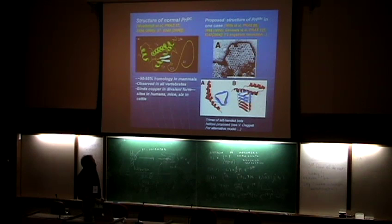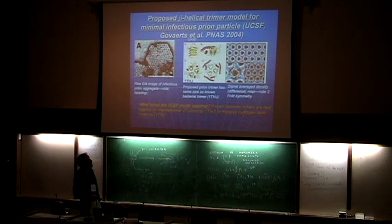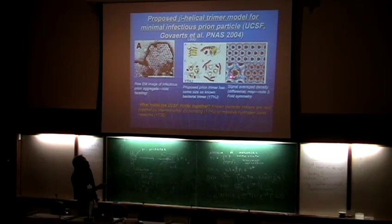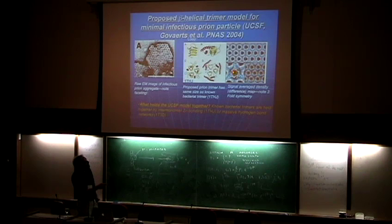It's a model - the resolution is below the resolution available in the experiment. But here's what motivated it: this is one of those bacterial enzymes I talked about before. You can take that bacterial enzyme and on top of the signal-averaged data where you can see this three-fold symmetry of the red patches, you can take this bacterial trimer and plop it right on top of that. So they made a trimer of beta-helices, took the alpha-helices that were left over and stuck them on the outside.